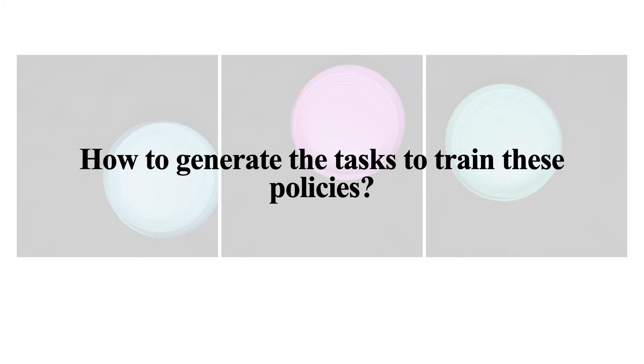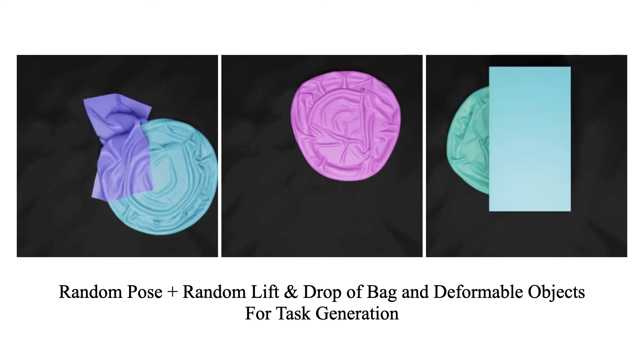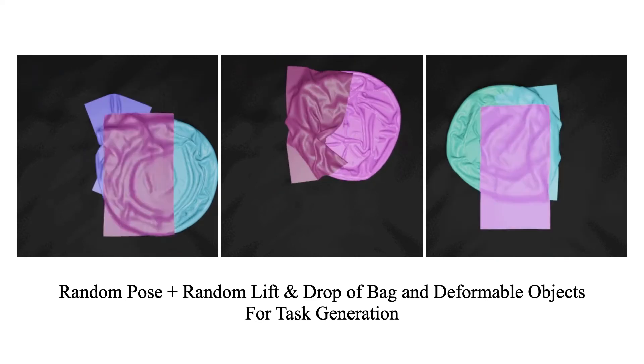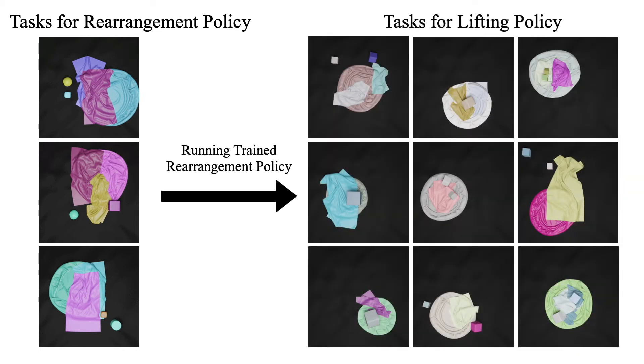But how do we generate the tasks for these policies? We start by dropping an opened bag and various objects in random poses in the simulation workspace. We then perform random lift and drop for the bag and the deformable objects. Note that we also ensure that the rigid objects are not already inside the bag opening. The final configurations obtained form the task set for the rearrangement policy. We run a trained rearrangement policy on these configurations to obtain the task set for the lifting policy. Note that we balance the task set so that it's not skewed towards either the good configurations or the bad ones.